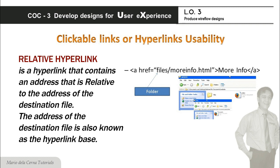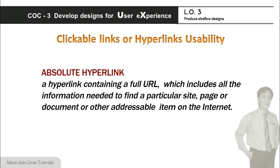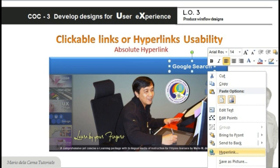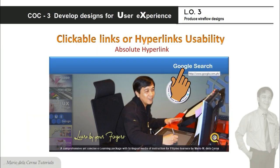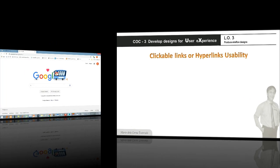Ito ay ang relative hyperlink at ang absolute hyperlink. Ang relative hyperlink, ang ibig sabihin nito na ang file ng link page ay nasa local mo na folder — sa computer mo man o sa c-panel ng iyong website. Habang ang absolute hyperlink, ang ibig sabihin nito na mag-link ka sa ibang website or web page na hindi naman ikaw ang may-ari. Sakali gusto mong i-link ang google.com.ph sa iyong website — hindi ikaw ang may-ari ng Google, ngunit maaaring mo itong i-hyperlink sa iyong website.